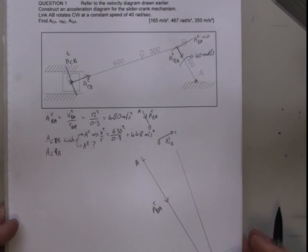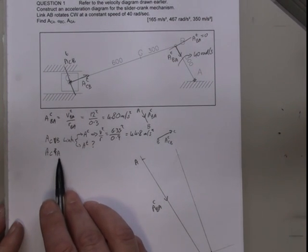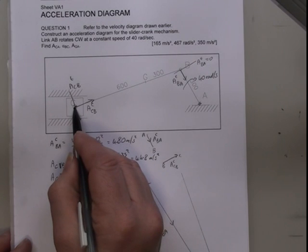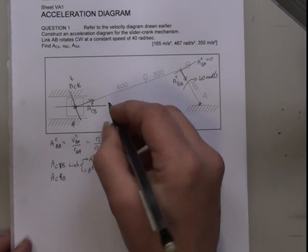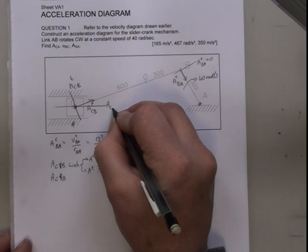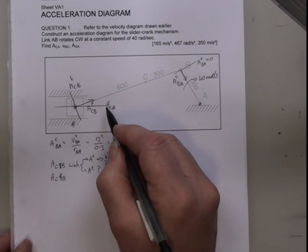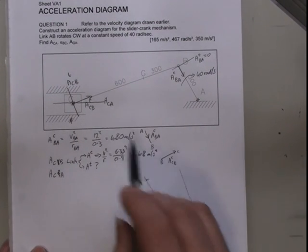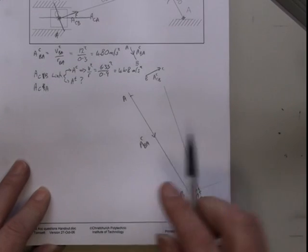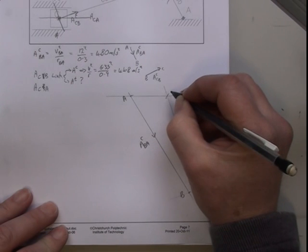The other one I now know is A of CA, acceleration of C relative to A. It's not a link, it only has one part to it. So in here, CA is in here. My velocity of this point can only be horizontal. Therefore, my acceleration can only be horizontal. Now it's not centripetal or tangential because it's not a link. It is just the acceleration of CA. It must be horizontal. So it'll be a vector passing through C and A. Here's A, so therefore horizontal line through there. Where those two lines I've just drawn cross must be point C.